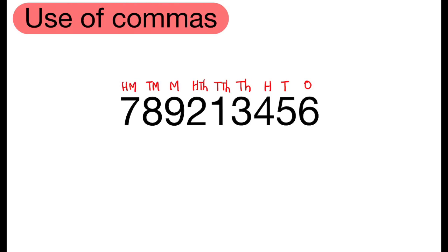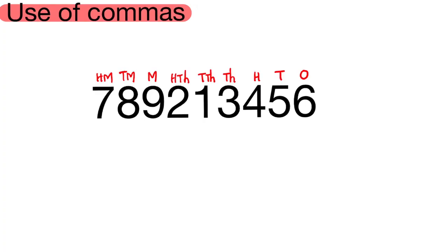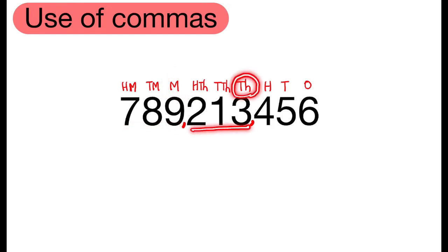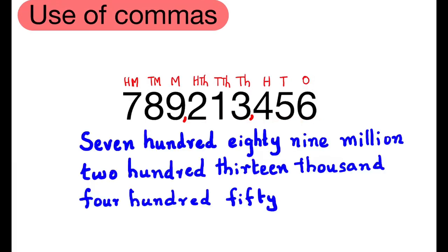In this system, the comma comes after every three digits from the right. The first comma comes after the hundreds place, and the second comma comes after the hundred thousands place. The number is 7,892,134,567.